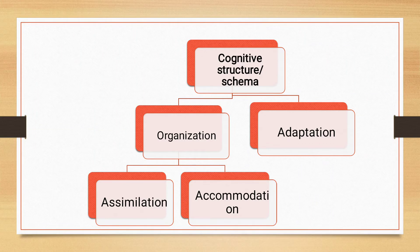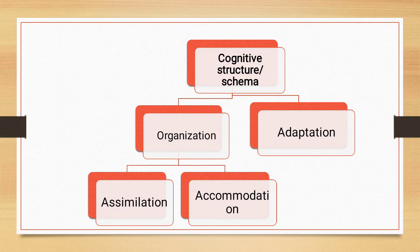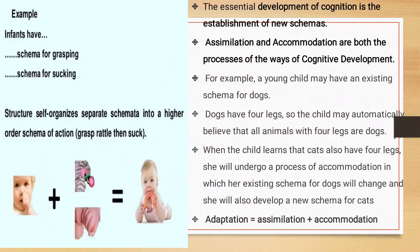Piaget defined the cognitive structure or schema in terms of two things: organization and adaptation. You have to organize things — arrange them from smaller to bigger — and then adapt to the environment. He says the schema undergoes organization and adaptation, and this organization involves two processes: assimilation and accommodation. As the child develops cognition, new schemas are developed. Assimilation and accommodation are both processes of cognitive development.